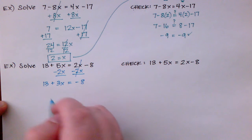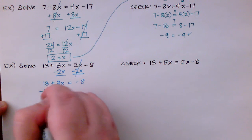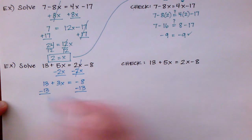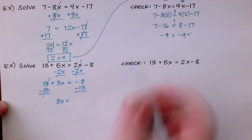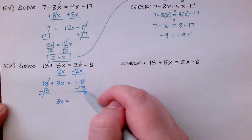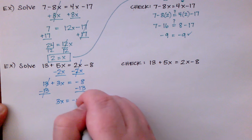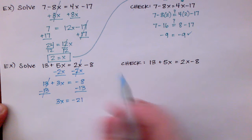5x minus 2x is 3x and now that's equal to negative 8. I need to get the 3x by itself so I'm going to subtract both sides by 13. Those 13's cancel each other out. I'm going to rewrite this. 3x is now equal to negative 8 minus 13 which is the same as negative 8 plus negative 13. That's negative 21. Divide both sides by 3 and I find my x is equal to negative 7.